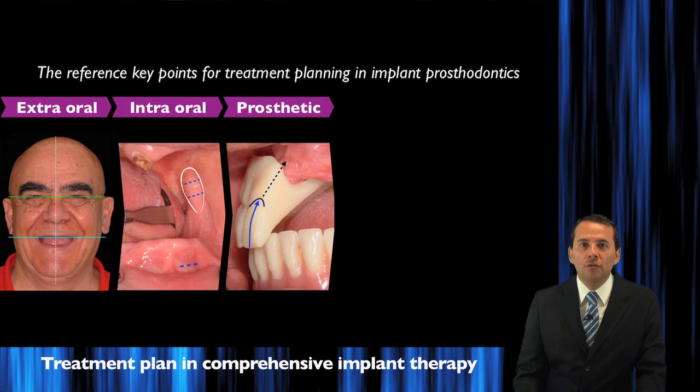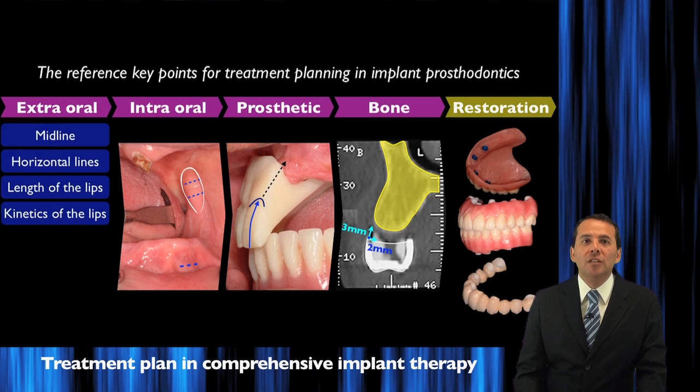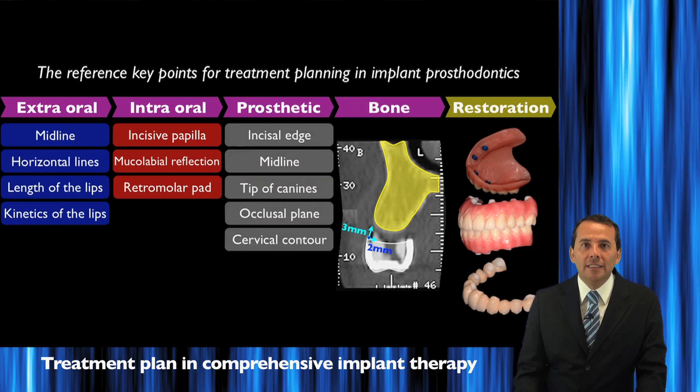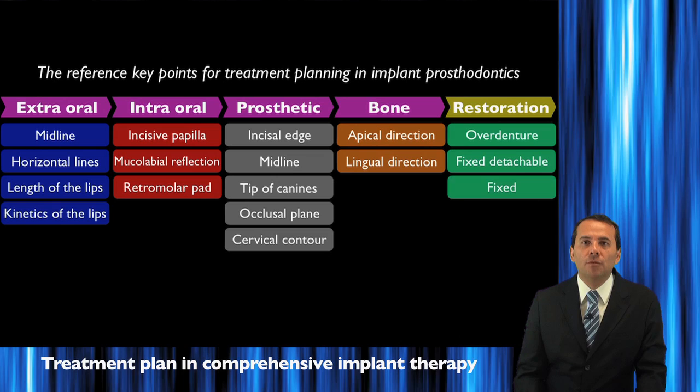Using the new teeth and the margin of the new crown, you can make the analysis in relation with the bone in order to determine the different type of restoration. We will review all this extra-oral or intra-oral information, what is important in the prosthesis to use as reference, what type of analysis we need to do with the existing bone, and the different types of restoration that we can offer to our patient.